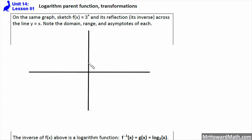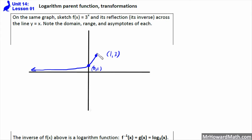The exponential function f(x) = 3^x has the points (0, 1) and (1, 3). We learned when we worked with exponentials that as long as they're not transformed in any way, we always have these points: (1, base) and (0, 1). That is always the case.